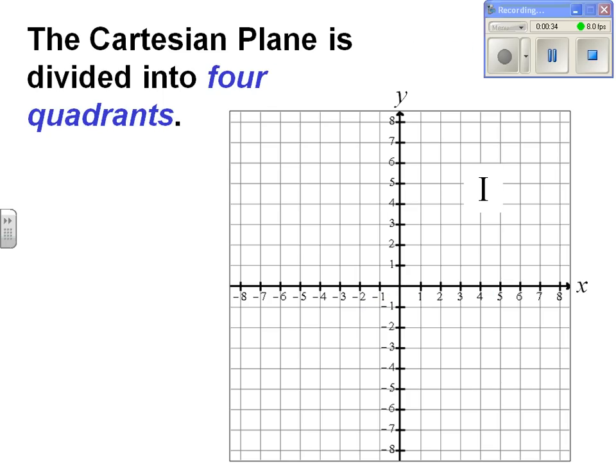The Cartesian plane is divided into four quadrants, and these four quadrants are named as 1, 2, 3, and 4 in the anti-clockwise direction and are represented using Roman numerals.